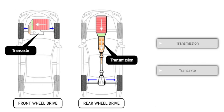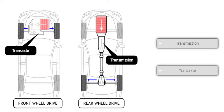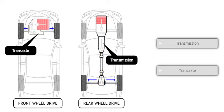Power flow is the flow of power from the engine to the drive wheels. Automatic transmissions and transaxles work basically the same way. They differ primarily in the way the engine's power is transferred to the driving wheels. Select both transmission and transaxle for additional information.